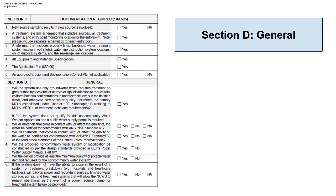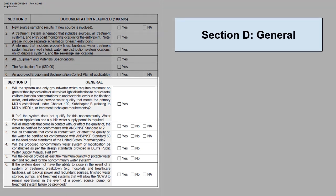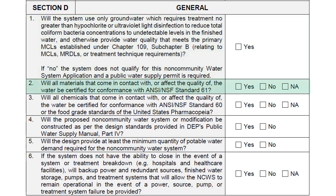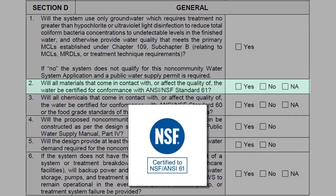Section D is intended to ensure that the system is following the general guidelines necessary for the approval of their non-community water system application. The applicant must first verify that they are using only groundwater, which requires treatment no greater than hypochlorite or ultraviolet light disinfection to meet all primary MCLs established under Chapter 109. Otherwise, the system does not qualify to use the non-community water system application and would instead be required to submit a public water supply permit. All materials must be acceptable by the department. If materials are certified for conformance with ANSI NSF Standard 61, they meet this requirement. If not, the department will review the specifications provided to see if the materials are acceptable.